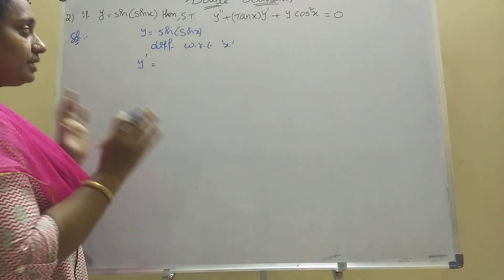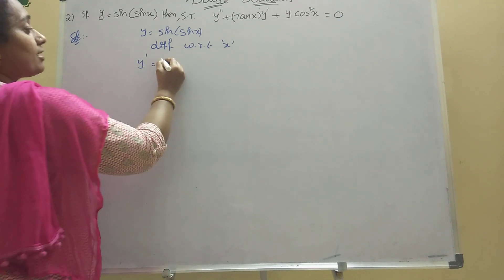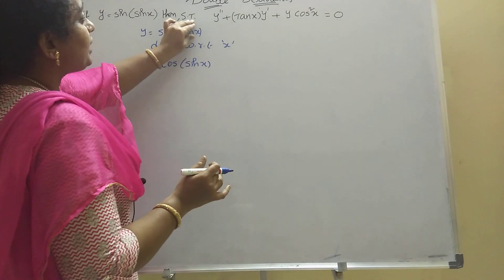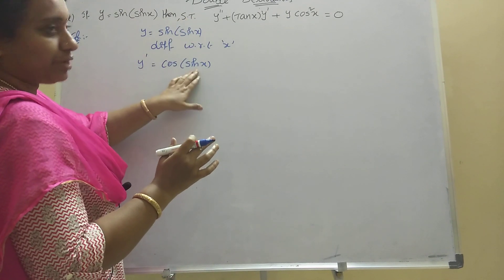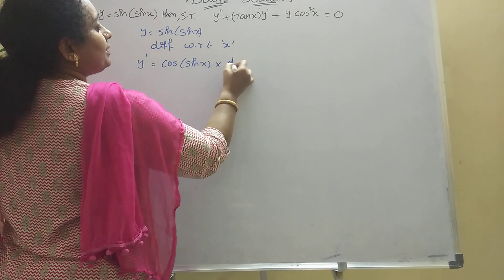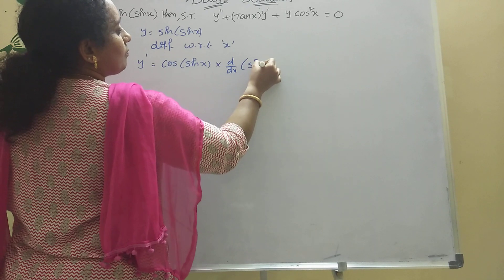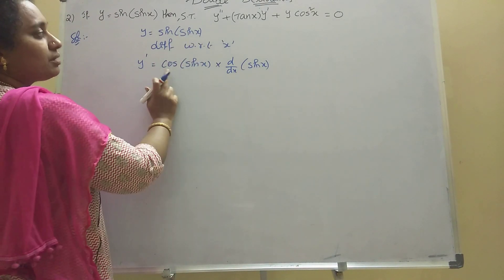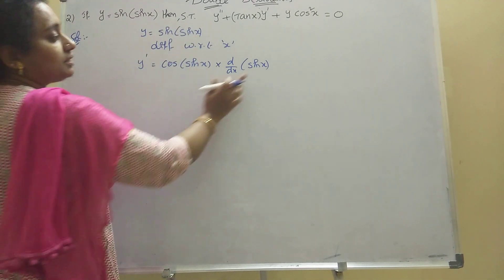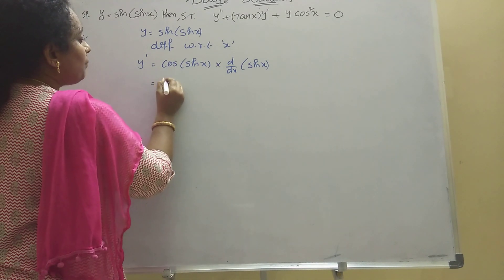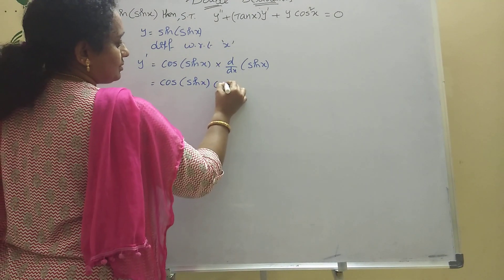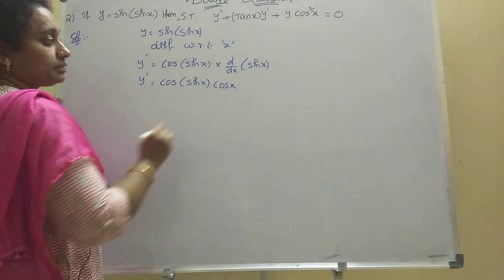First derivative: y' = d/dx of sin(sin x). By chain rule, the outer function derivative gives cos(sin x), and then multiply by the derivative of the inner function sin x, which is cos x. So y' = cos(sin x)·cos x.